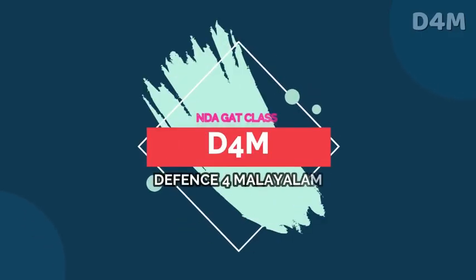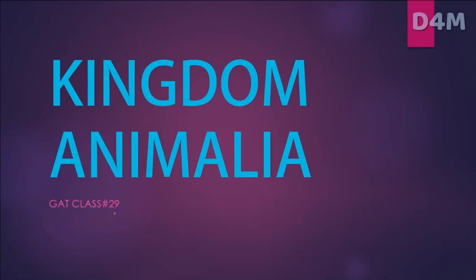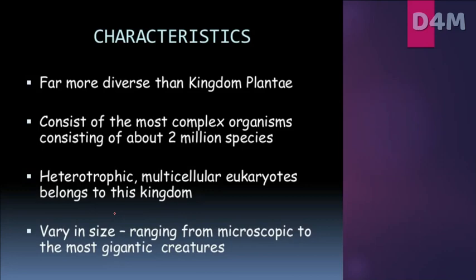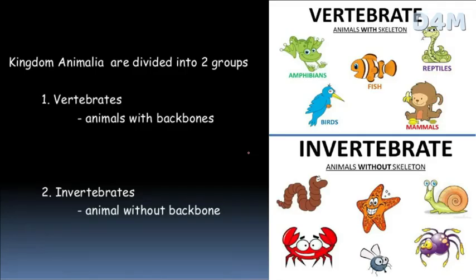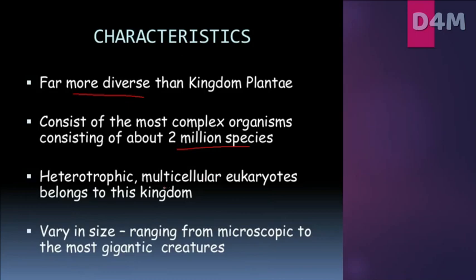Hello students, welcome to Defense Formal Aalam. This is the biology video of Kingdom Animalia. This is the 5th group of the 5 Kingdoms classification. The characteristics of Kingdom Animalia: it is more diverse and consists of the most complex organisms. There are more than 2 million species. These are heterotrophic and multicellular eukaryotes.